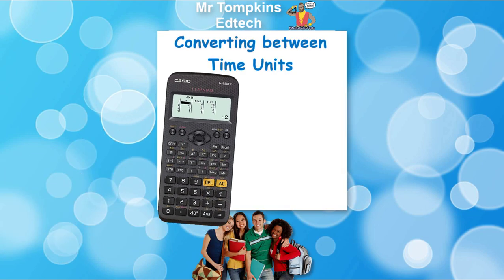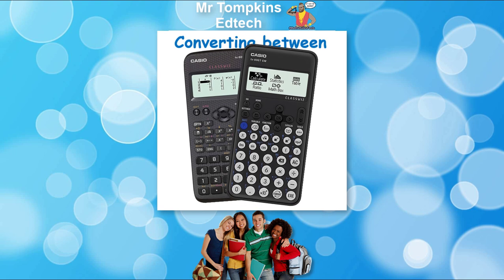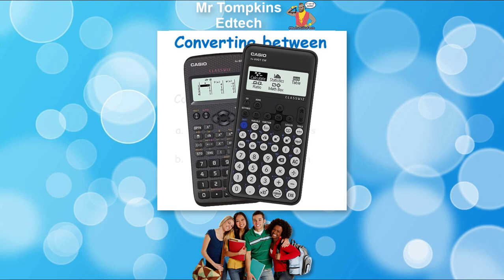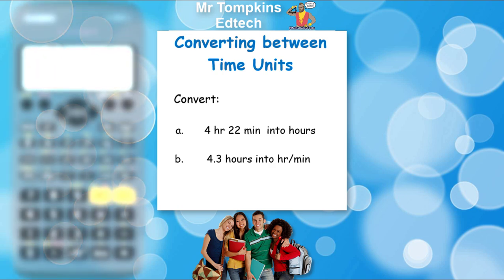Convert between time units on the old and new style Casio calculator. Firstly, convert 4 hours and 22 minutes into hours.